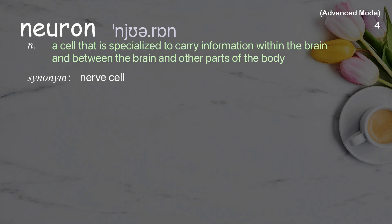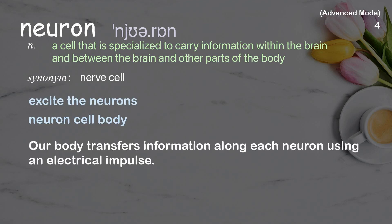Neuron: a cell that is specialized to carry information within the brain and between the brain and other parts of the body. Examples: excite the neurons; neuron cell body. Our body transfers information along each neuron using an electrical impulse.